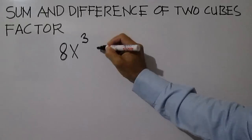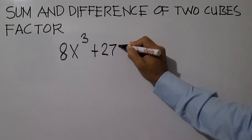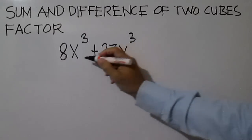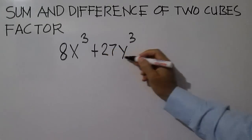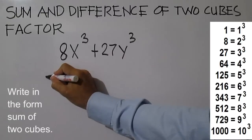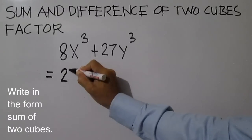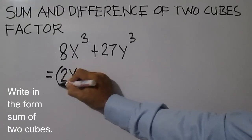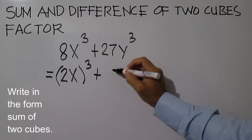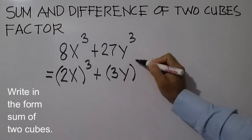Factor 8x cubed plus 27y cubed. 8 can be written as 2 cubed, 27 as 3 cubed. Write in the form sum of two cubes: 2x quantity cubed plus 3y quantity cubed.